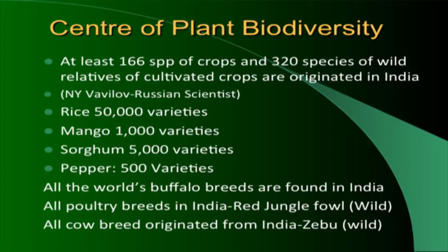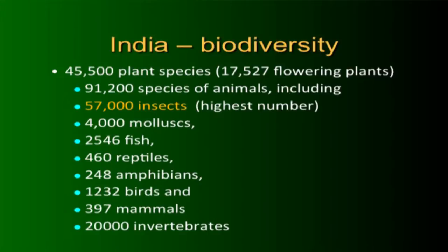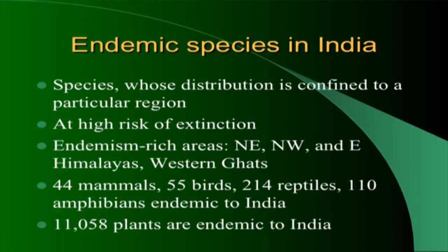India had 50,000 varieties of rice, 1,000 varieties of mangoes, sorghum, and pepper. All the world's buffalo breeds are found in India. The red jungle fowl is the wild variety of all poultry breeds. India has over 91,000 species of animals — the highest being insects — and more than 45,000 species of plants. Endemic-rich areas include the Northeast and Eastern Himalayas, as well as the Western Ghats.